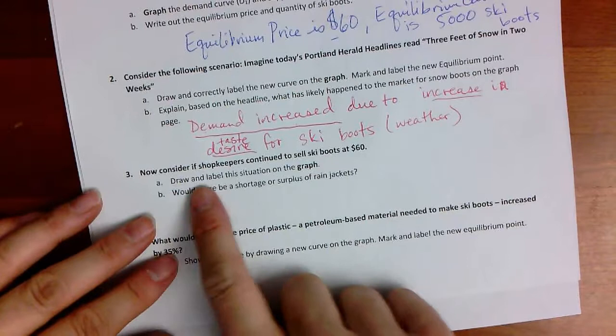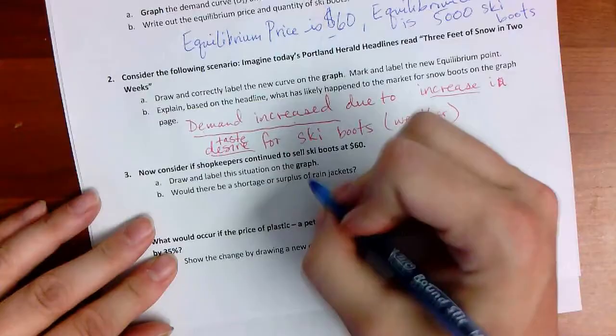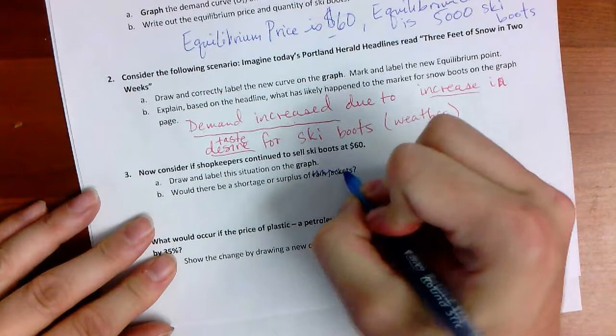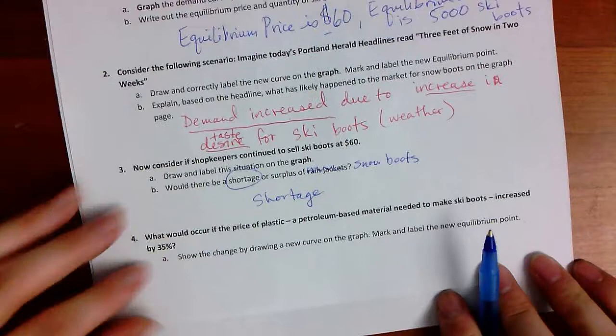So, back here on this sheet, after you've graphed, draw and label this situation on the graph, which we just did. We've put the quantity supplied, quantity demanded, and then we answer this question in words. Oops, that should say snow boots. What's the answer? It's a shortage.